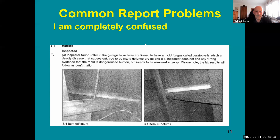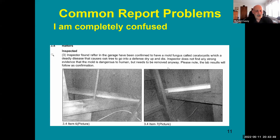The inspector found rafters in the garage had mold fungus called 'stereotisitis' — described as a deadly disease that causes oak trees to dry up and die. The inspector said there was no strong evidence mold was dangerous to humans, but recommended removal anyway, noting lab results would follow. The attorney asked: can you actually determine the type of mold by looking at it? You can't do that without lab testing.